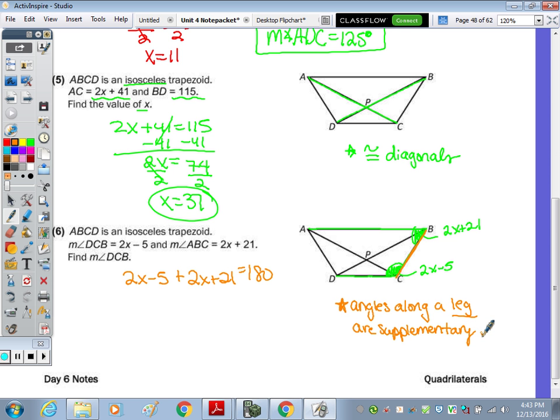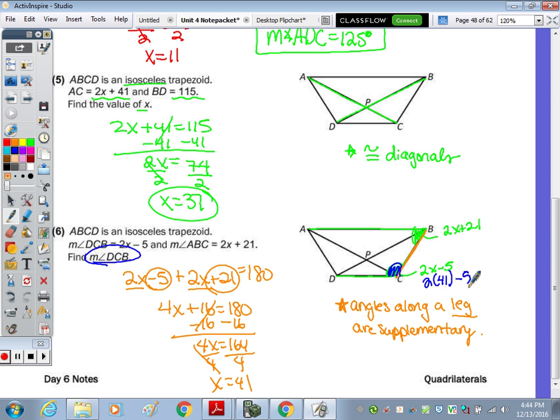And that's because angles along a leg are supplementary. To solve, we have some like terms. 2X and 2X is 4X. Negative 5 plus 21 is 16 equals 180. Subtract the 16, divide by 4. X is 41. But we need to find DCB. DCB is this angle right here. So 2 times 41 minus 5. Well 2 times 41 is 82. And 82 minus 5 is 77 degrees.